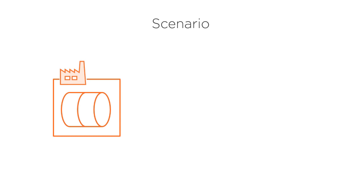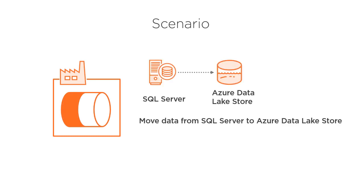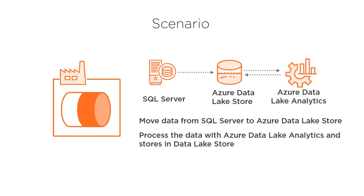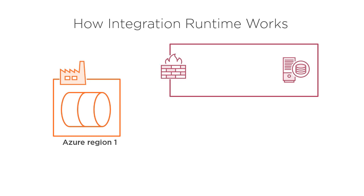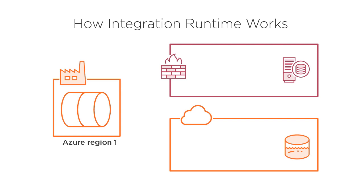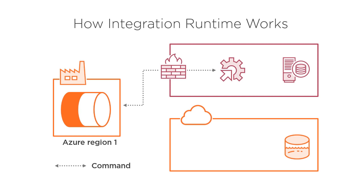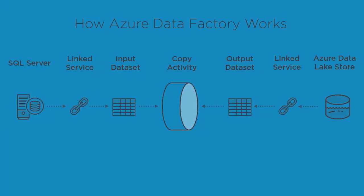Let's take a scenario to understand how integration runtime works with data factory to orchestrate data movement. There is a data factory pipeline with two activities. The first is a copy activity to move data from SQL Server to Azure Data Lake Store, and the second activity processes the data with Data Lake Analytics and stores it in the Data Lake Store. When the first activity begins, data factory directs the self-hosted IR to copy the data from SQL Server to Data Lake Store. The self-hosted IR is defined in the linked service that connects to the SQL Server, so in this case the self-hosted integration runtime performs the copy activity.